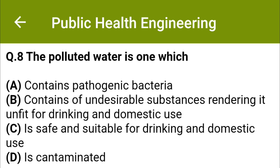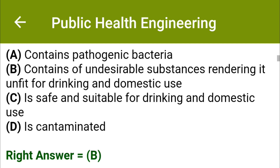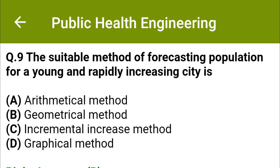Polluted water is one which: option A: contains pathogenic bacteria, option B: contains undesirable substances rendering it unfit for drinking and domestic use, option C: is safe and suitable for drinking and domestic use, option D: is contaminated. The correct answer is option B. The suitable method of forecasting population for a young and rapidly increasing city is: option A: arithmetical method, option B: geometrical method, option C: incremental increase method, option D: graphical method. The correct answer is option B: geometrical method.